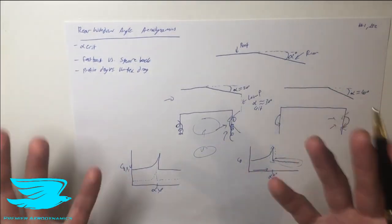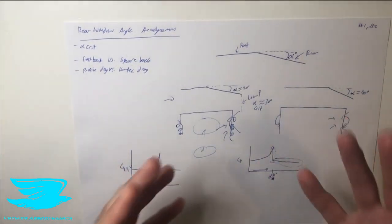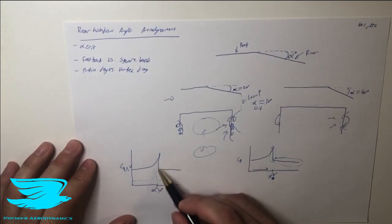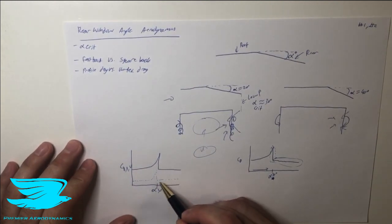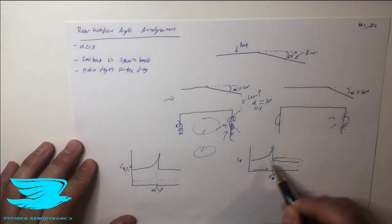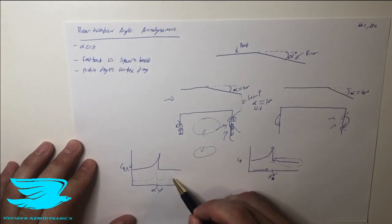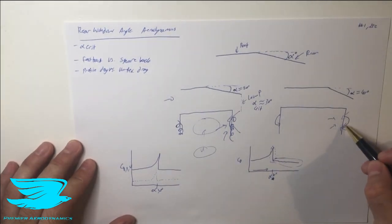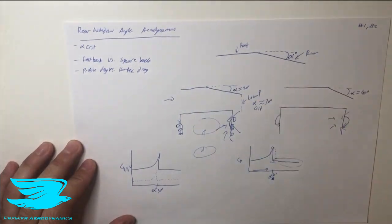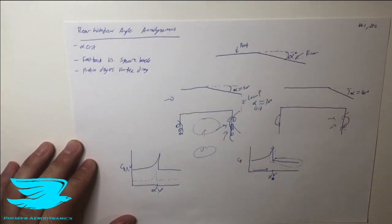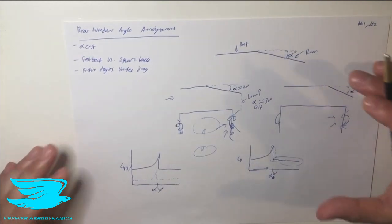The profile drag is roughly three times greater than the vortex drag — about a three-to-one ratio. After the vortices pop, we still have significant drag in both profile and vortex components, due to the opposite-sign weaker vortices forming from the square back geometry.